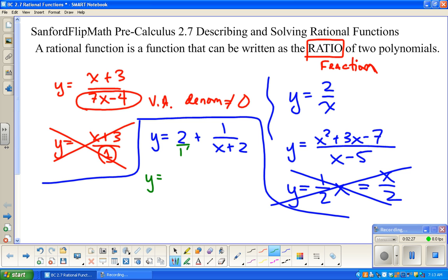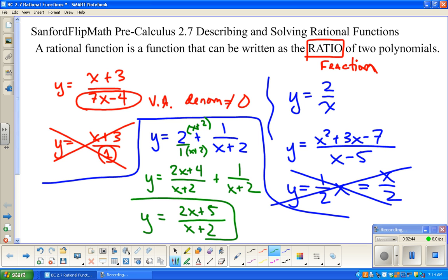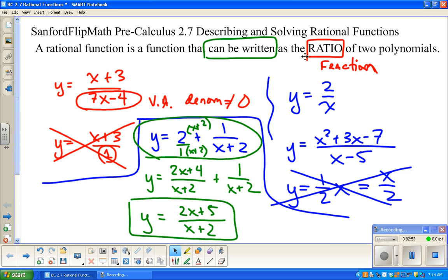If I get a common denominator here, then this becomes 2x plus 4 over x plus 2 plus 1 over x plus 2, which means I could write this 2x plus 5 over x plus 2. So this is definitely rational, and what that means is what was originally here in blue was rational because it is a function that can be written as the ratio of two polynomials.